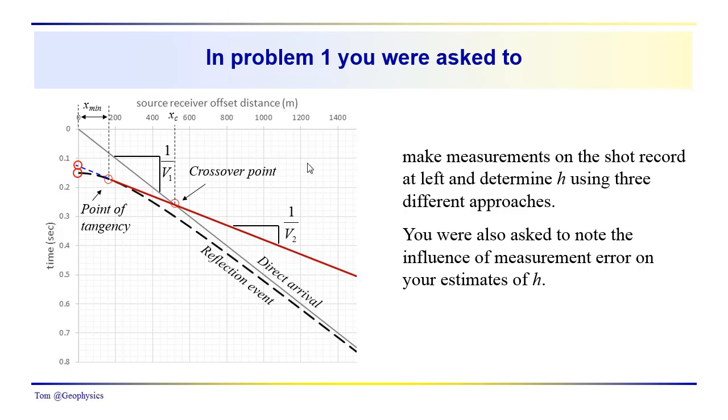Last time we gave you a couple problems to solve. You were asked to make measurements on the shot record that we've been using for illustration purposes and to determine the thickness of the upper layer using three different approaches. You were also asked to note the influence of measurement error on your estimates of layer thickness. That was the first problem. So let's take a look at that.